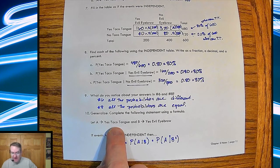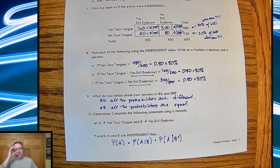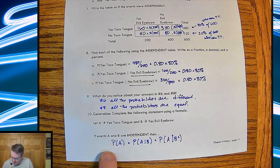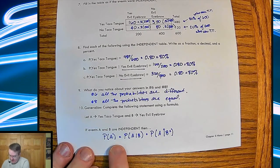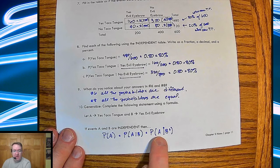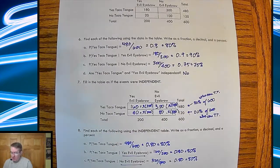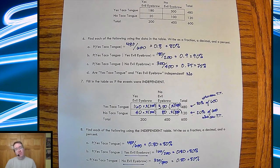A is meaning, yes, they can taco tongue. B means they can do evil eyebrow because usually we label events by letters just because who wants to write two words when you can write a single letter. So probability of A equals the probability that A given B is equal to probability of A given not B or the complement of B. So that defines that A and B are independent. So there ends the experience part. We're going to formalize it in a second. We'll talk to you soon.